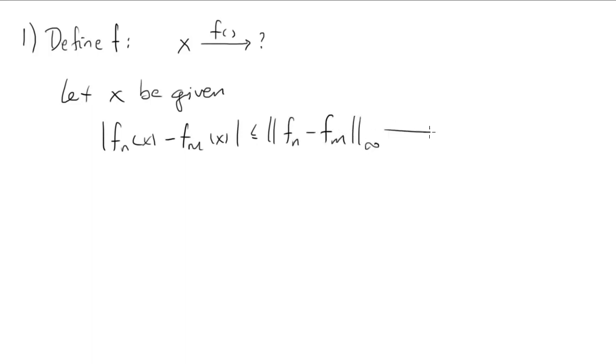There's our uniformity. So we know that goes to zero as n and m go to infinity. So this sequence of real numbers, F_n(X), converges.